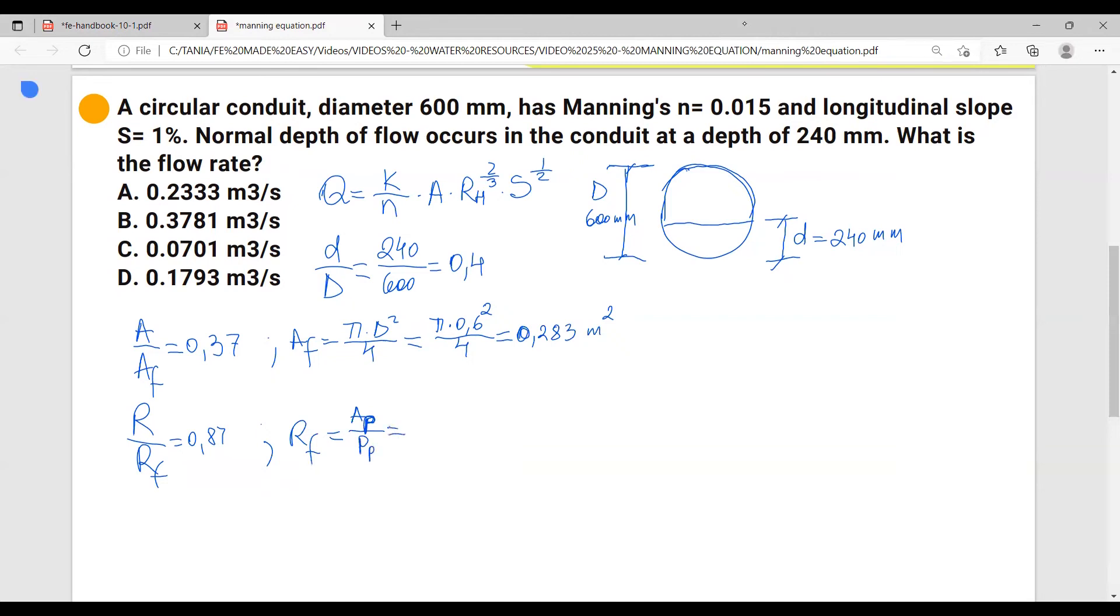And this would be pi d squared over 4. The perimeter of the pipe is actually the length of the circle, and the length of the circle is pi times d. So I will do pi times d.